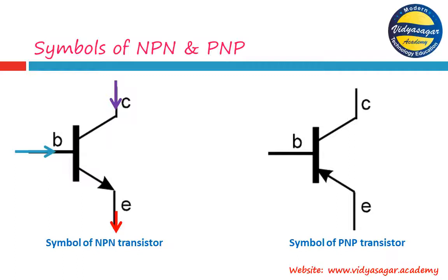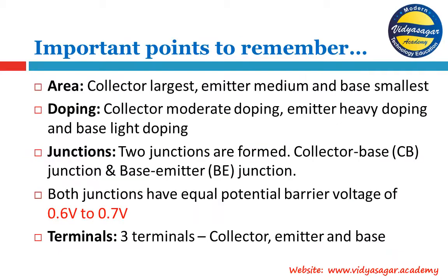According to Kirchhoff's current law, in an NPN transistor: emitter current is equal to collector current plus base current. The same applies for PNP — in PNP the emitter current is injected into the emitter terminal, where it splits into collector current and base current. So Kirchhoff's current law applies here also: emitter current equals collector current plus base current. Keep this summary of topics clearly in mind as we will use it ahead.